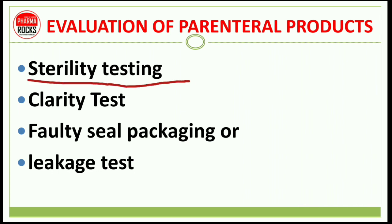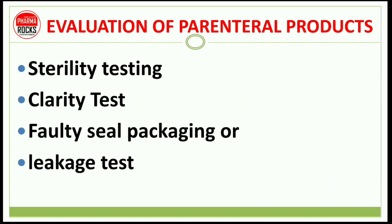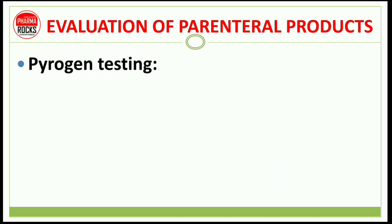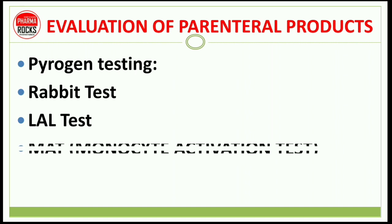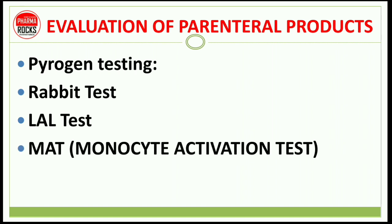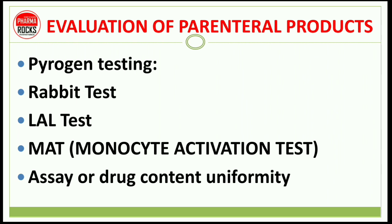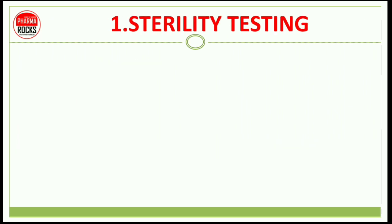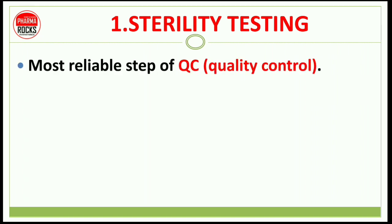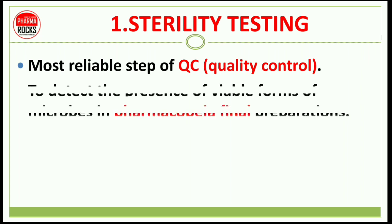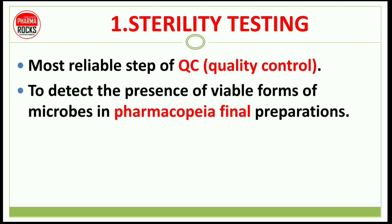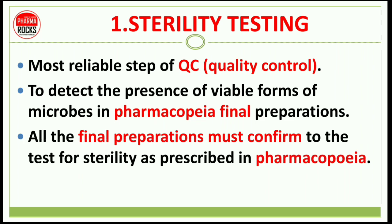First of all, sterility testing is most important, in which we cover the clarity test, leakage test, and in pyrogen testing we study about the rabbit test, LAL test, meth test, monocyte activation test, and assay or drug content uniformity. Sterility testing is the most reliable step of quality control — it detects the presence of viable forms of microbes in pharmacopoeial final preparation.